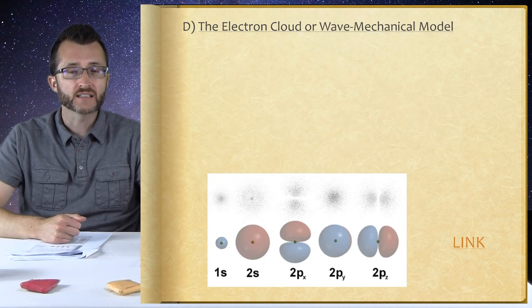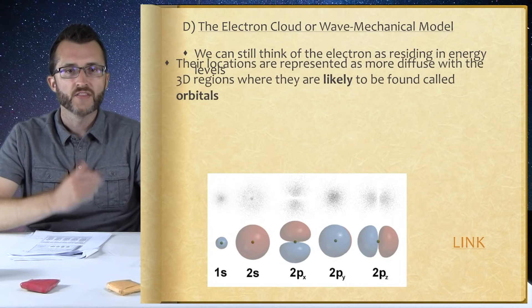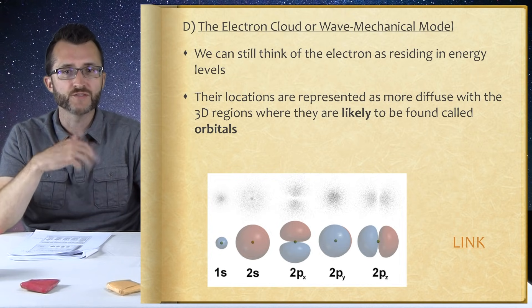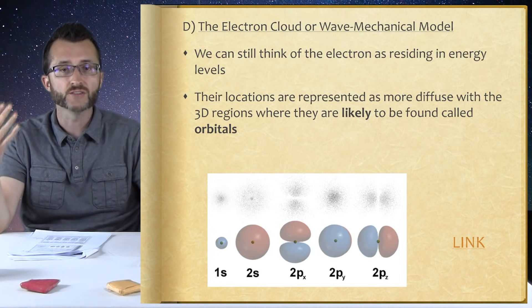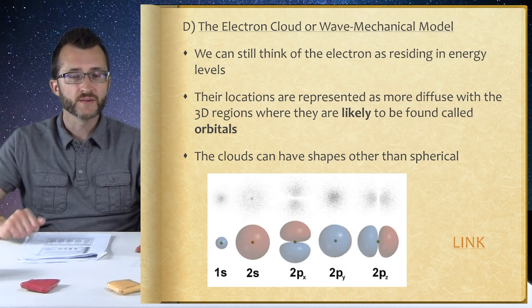Also known as the electron cloud or wave mechanical model. We can still think of electrons as residing in energy levels, like in the Bohr model. Their locations, however, are represented as more diffuse, with 3D regions where they are likely to be found called orbitals. An important distinction: in the Bohr model, electrons move in circular orbits around the nucleus, much like planets around the sun — flat paths. In reality we have three dimensions. Orbitals are regions of space of most probable electron location. The clouds can have shapes other than spherical.